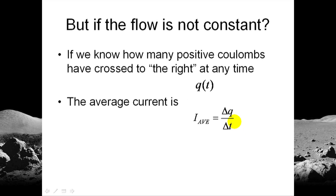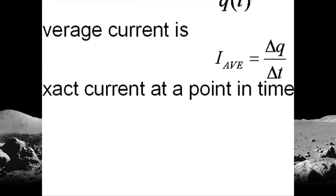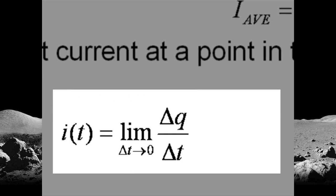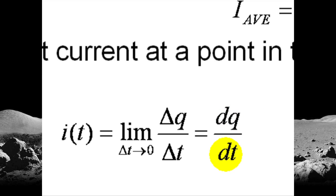But what if what we want is not the average current? What we want is the exact value of the current at one point in time. Well, what we do is we make that time window as small as possible, infinitesimally small. That is the instantaneous current at one point in time. But you remember from differential calculus in the first year that that limit is the derivative of q with respect to time. That is right. The instantaneous current at any point in time is the first derivative of q with respect to time.